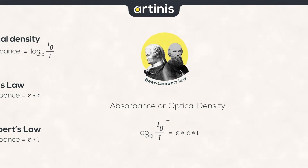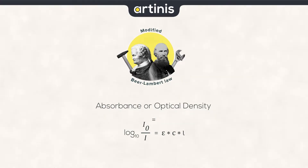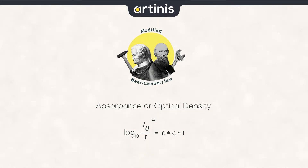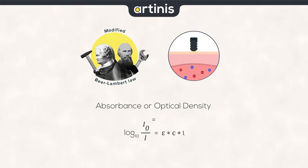In near-infrared spectroscopy, we use a modified version of this formula, the modified Beer-Lambert law, to estimate concentration changes from physical properties. Why does it need to be modified? Because the regular Beer-Lambert law assumes that light does not scatter in the medium it is measuring, but in biological tissue, light does scatter.